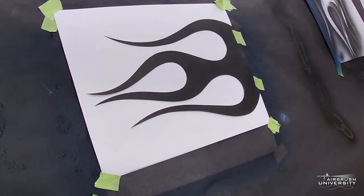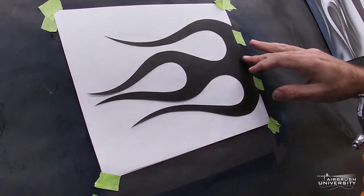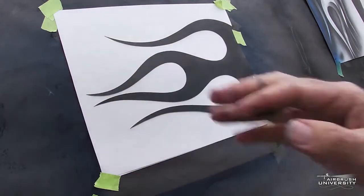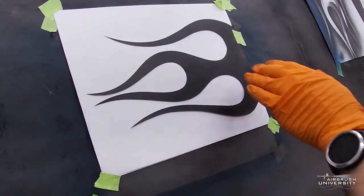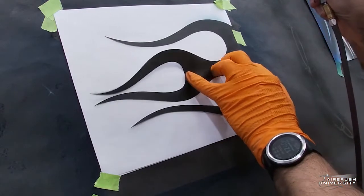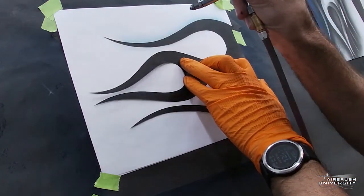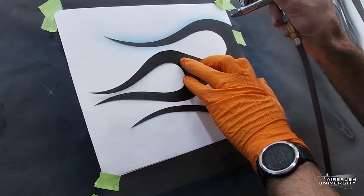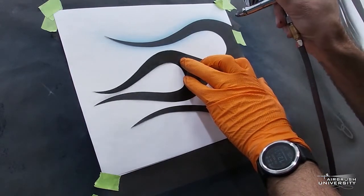Another way you can use this flame stencil is to do the reverse for ghost flames. Just tape it up on top of a regular piece of paper and then airbrush on the outside. Right now I'm focused on this top lick of the flame. The air pressure is what's holding the paper down.